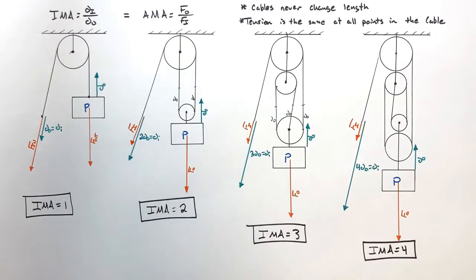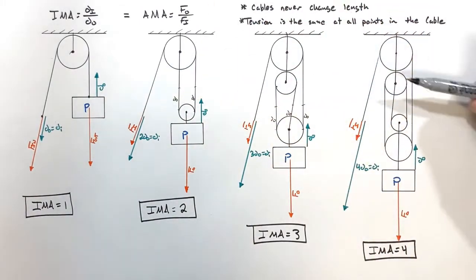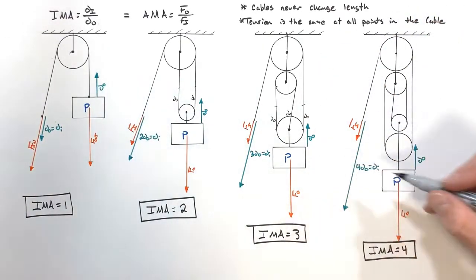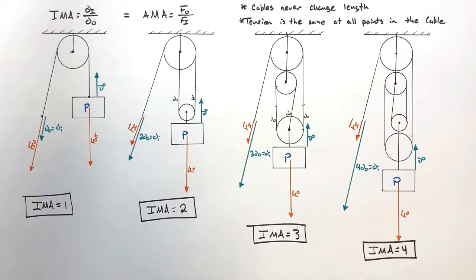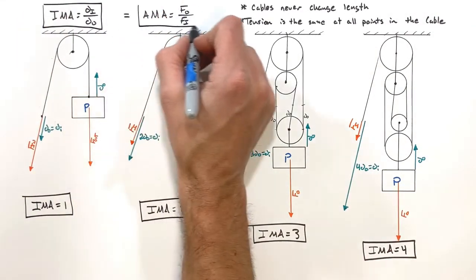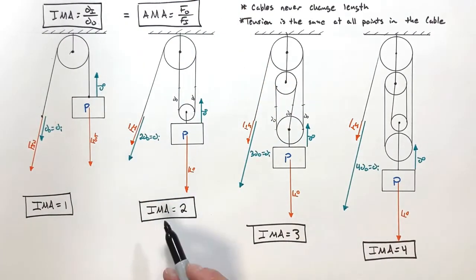So we have four different pulley arrangements, and in each case they work differently based on how they're strung up and how the pulleys are connected together. It's important to remember that when dealing with pulleys we say IMA and AMA are the same — we're treating our pulleys as 100% efficient when determining forces based on displacements.